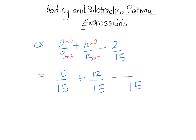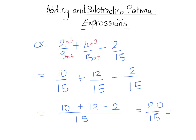We already have 2 fifteenths over 15, so no changes needed there. Now that everything is over 15, we can write it all over one big 15: 10 plus 12 minus 2, which gives us 20 over 15. That simplifies to 4 over 3, since 5 is a common factor — dividing 20 by 5 gives 4, and dividing 15 by 5 gives 3.